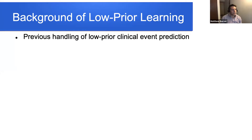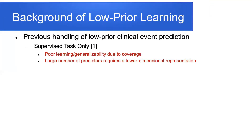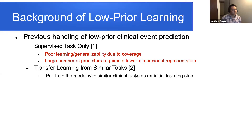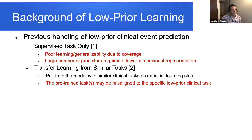Previous methods for low prior clinical event prediction include simply taking the supervised task as-is, but this leads to poor learning and generalizability due to limited data coverage, and the large number of predictors makes it hard to learn a solid low-dimensional representation. Another option is transfer learning from similar tasks, which requires pre-training the model; however, the pre-trained tasks may be misaligned to the specific low prior clinical task, potentially leading to a worse local optimum.